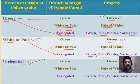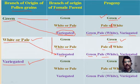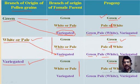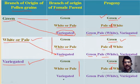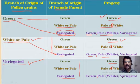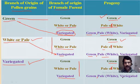In the third case, variegated pollen grains are selected as the male parent and crossed with all similar types of female parents. Crossed with green, it gives green; crossed with white or pale, it gives white or pale; and crossed with a variegated female, the female parent is again expressed, giving three types of offspring: green, pale or white, and variegated.